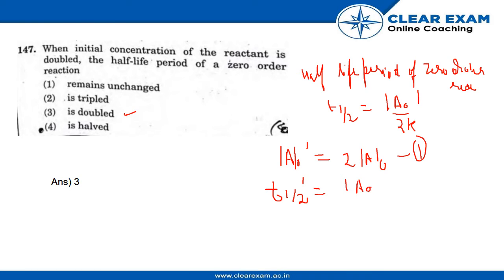would be A₀ dash by 2k - that is equation 2. From equations 1 and 2,